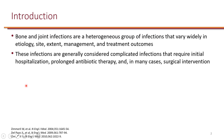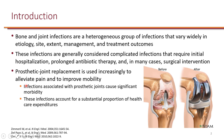Surgical interventions are key in source management. Nowadays, prosthetic joint replacement is used frequently to alleviate pain and to improve mobility. Unfortunately, these prosthetic devices can get infected, which can lead to significant morbidity.